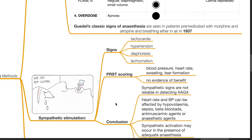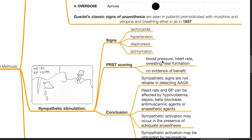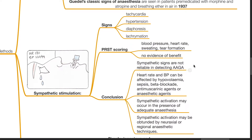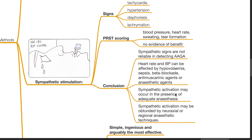Sympathetic stimulation can produce signs which may be used to assess depth of anesthesia. However, they are unreliable. Signs such as tachycardia, hypertension, diaphoresis, and lacrimation can occur in situations other than patient awakening. Sympathetic signs are not reliable in detecting AAGA. Heart rate and BP can be affected by hypovolemia, sepsis, beta blockade, anti-muscarinic agents, or anesthetic agents. Sympathetic activation may occur in the presence of adequate anesthesia, or may also be obtunded by neuraxial or regional anesthetic techniques.